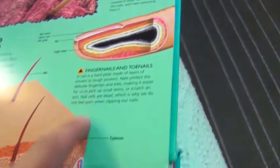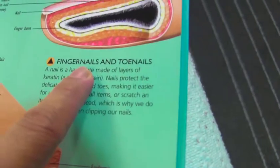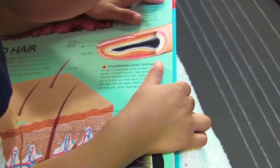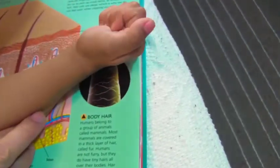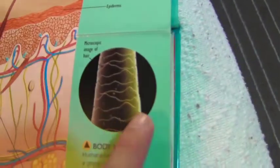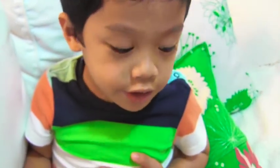It says here: fingernails and toenails. Did they have blood here? Yeah. Do the skeletons? Yeah.